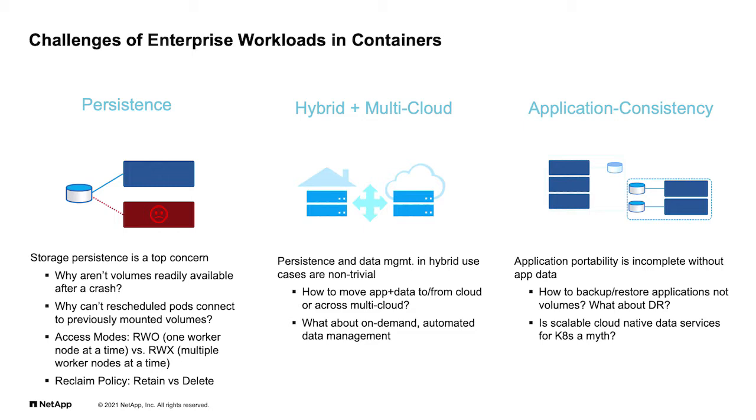It's very important to look at access modes. RWO (read-write once) only allows access to a volume from one worker node. What would happen if a pod gets destroyed and redeployed on another worker node, or during a rolling upgrade? You might need access to that volume from more than one pod. You may want to look into NAS to support rolling upgrades or the ability to dynamically redeploy a pod on a different worker node while still having access to the underlying volume.